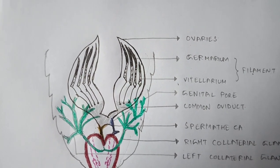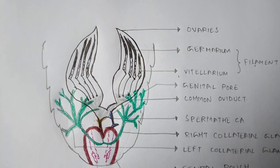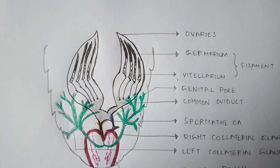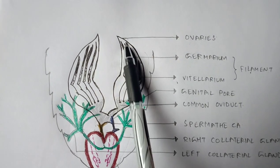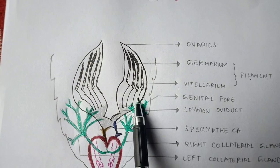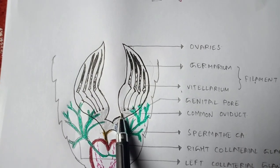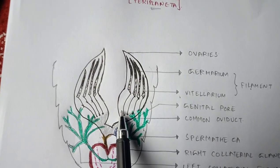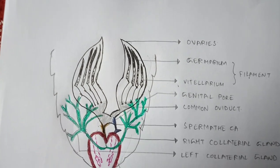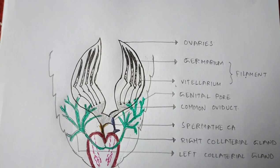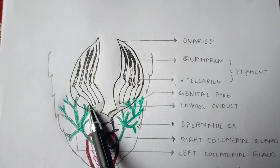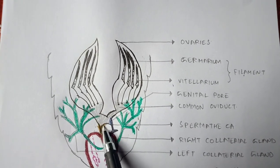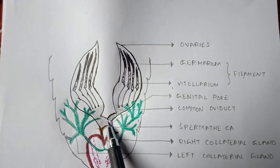Next is the oviduct — indicated by the pencil-shaded region. These oviducts arise from the posterior part of the ovaries. Since we have two ovaries, a common oviduct arises from the posterior region of each ovary. The two oviducts get combined together and form a short median duct known as vagina.